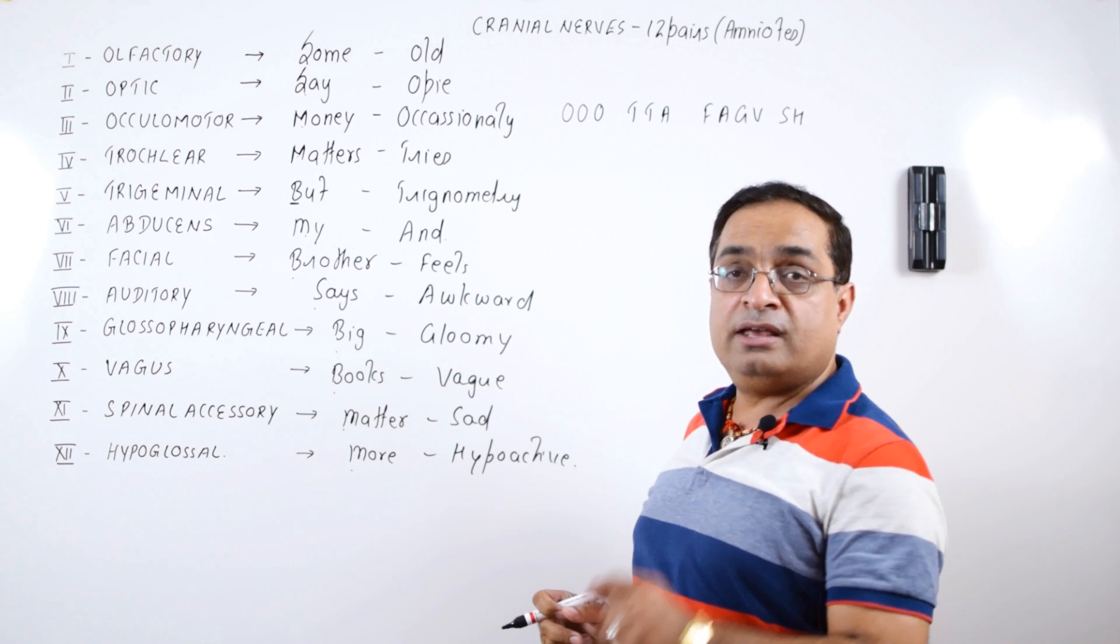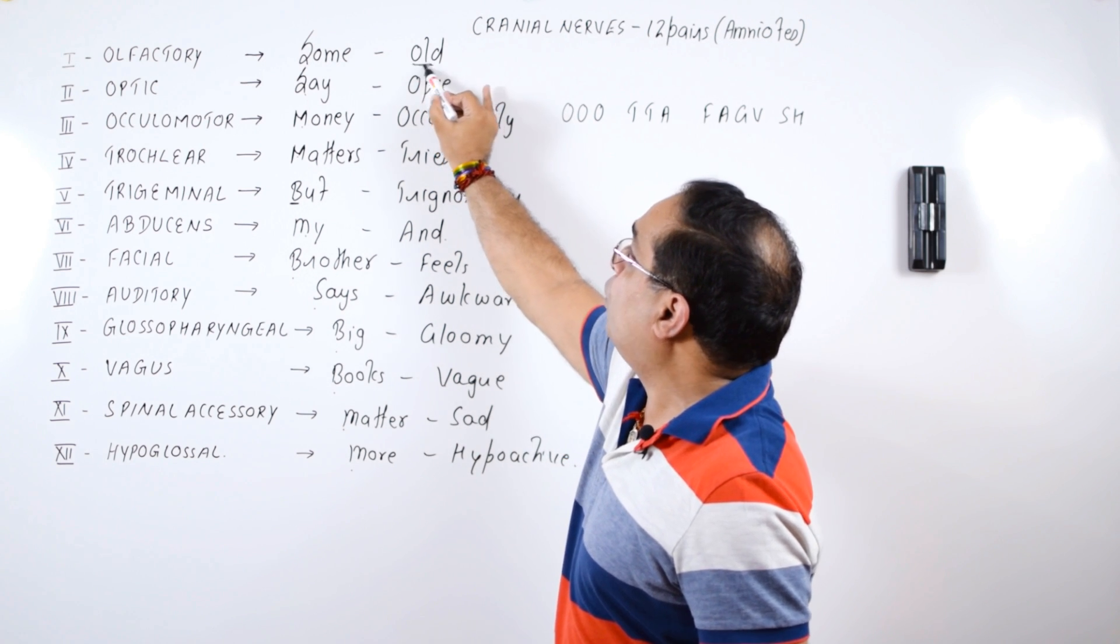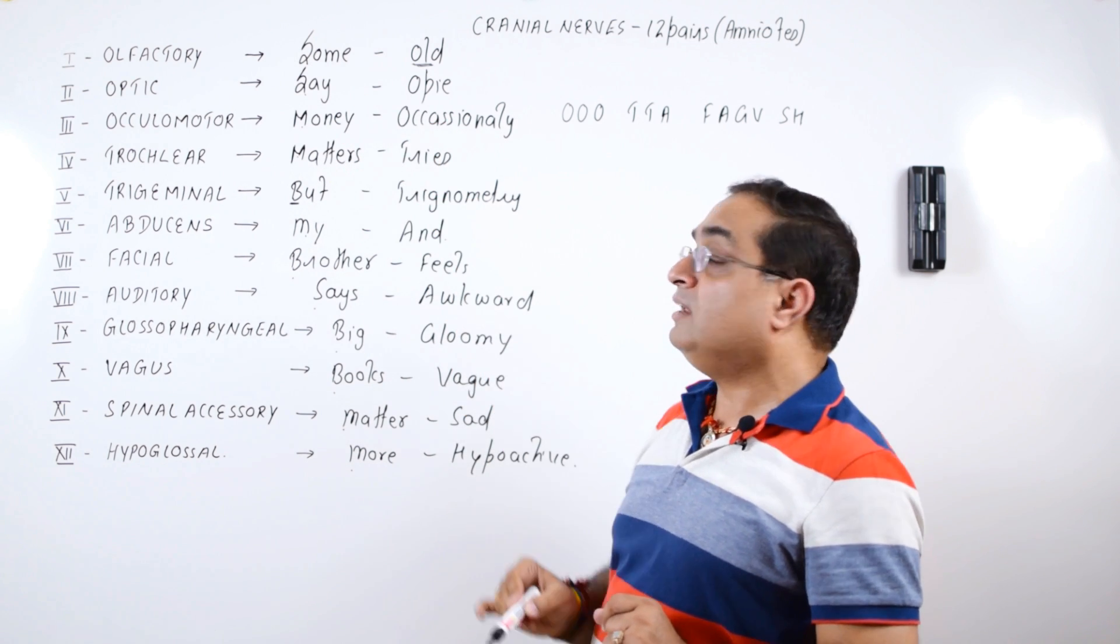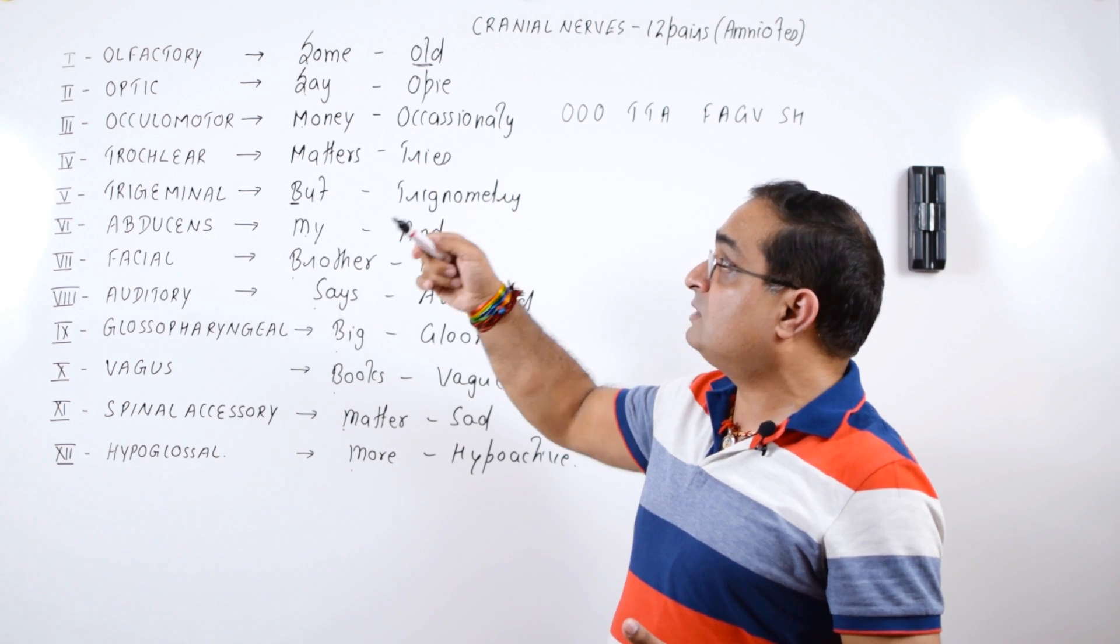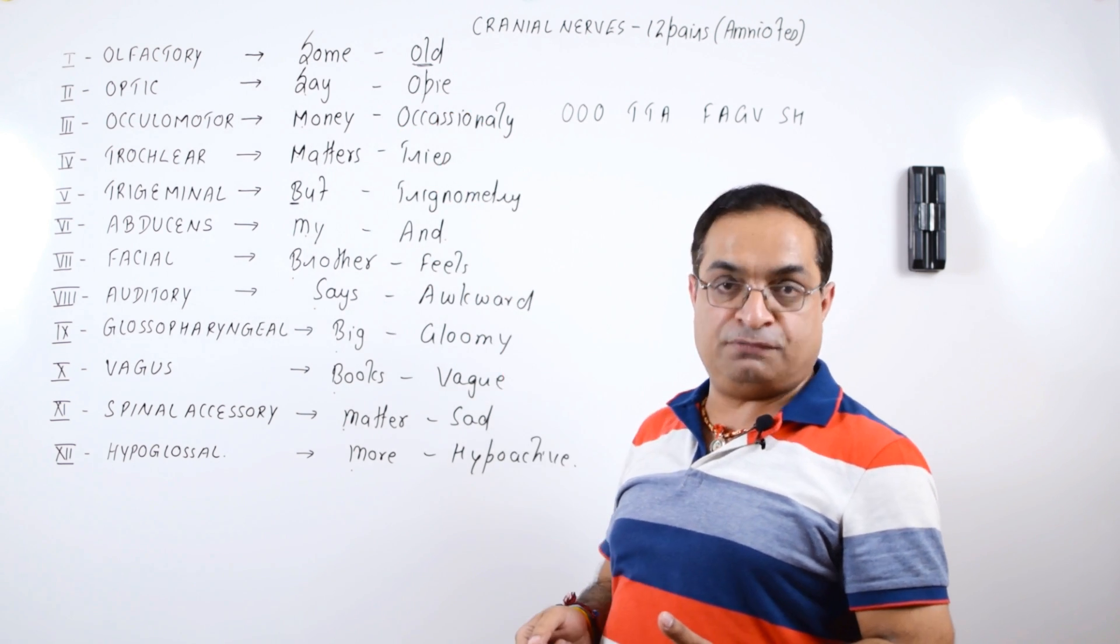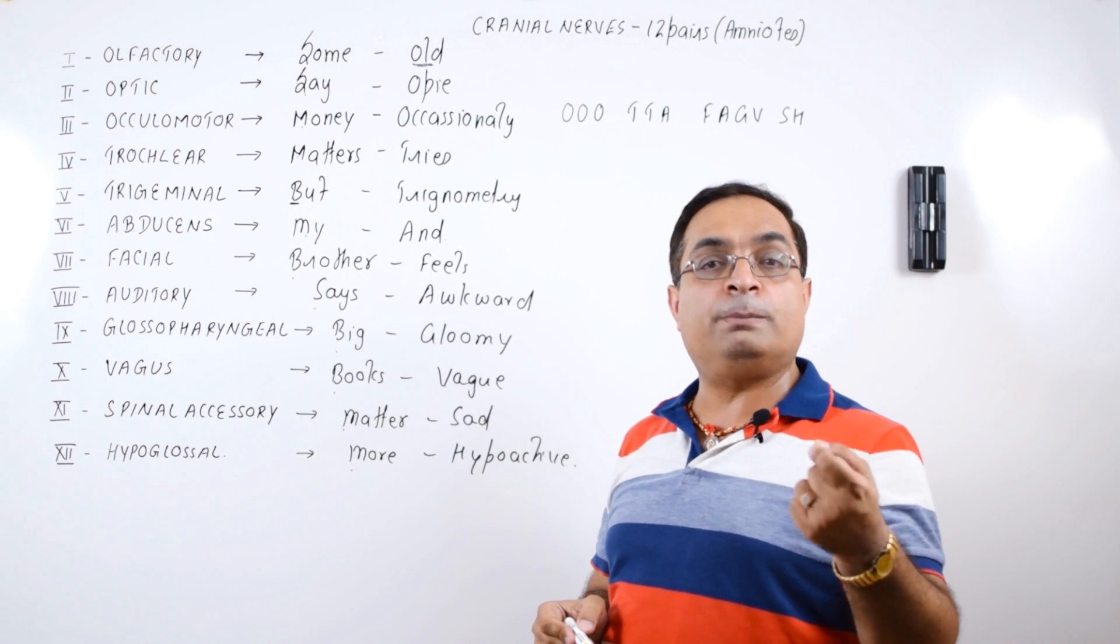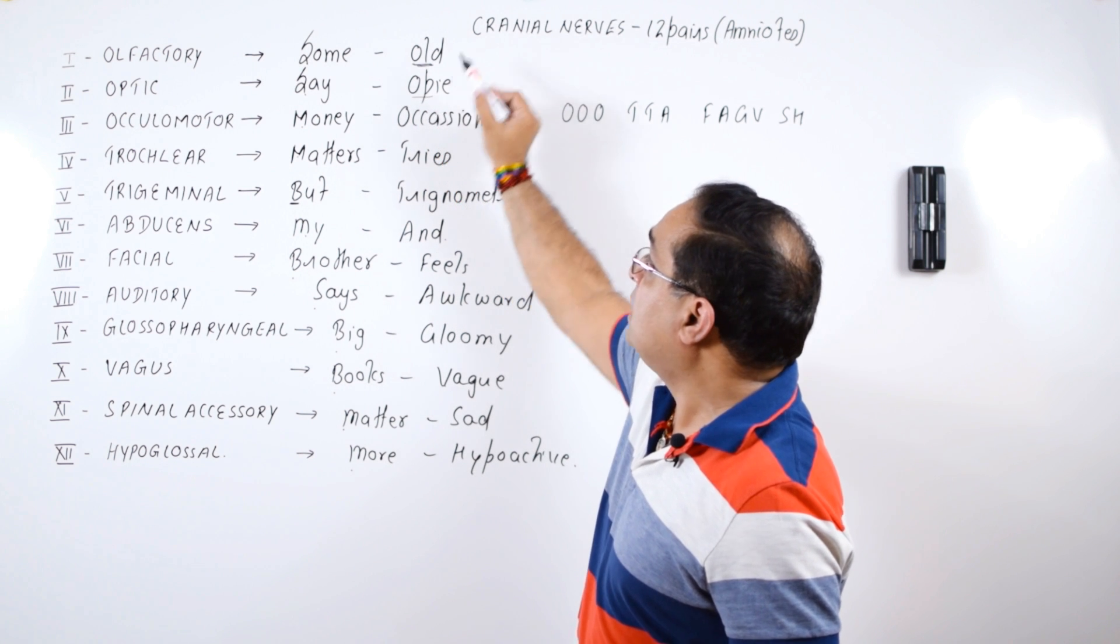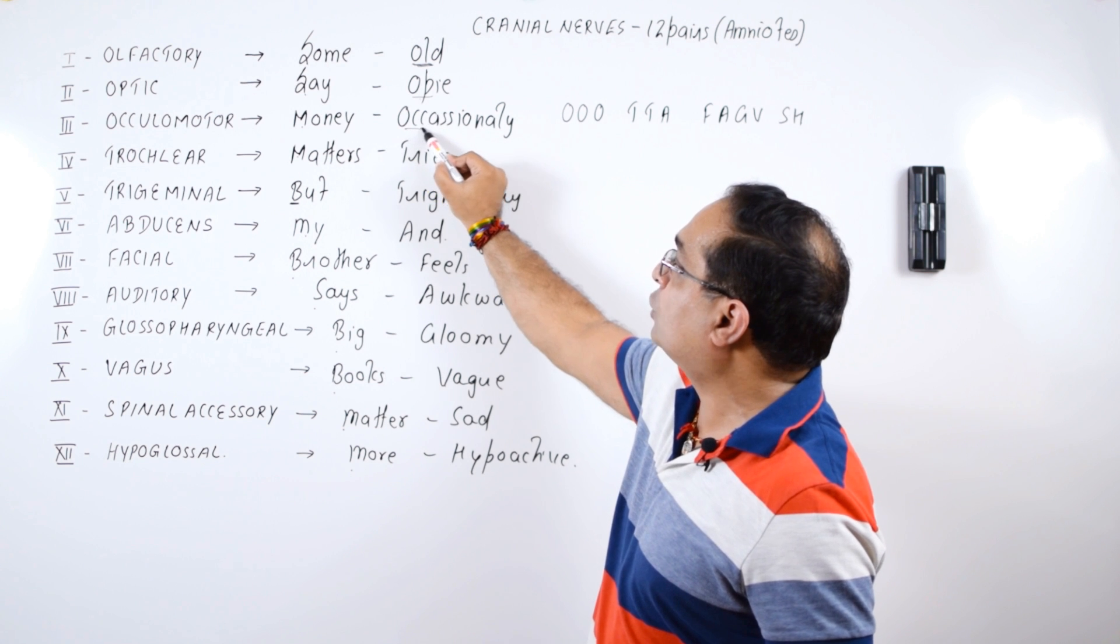Now from this sentence, we'll get a clear idea that the first cranial nerve starts with OL, it is olfactory. Because the names of the first three cranial nerves are starting with the alphabet O, so that might create a confusion. Is it the optic which is the first one or is it the olfactory which is the first one? So if you remember this sentence in sequence, that is old OP occasionally tries trigonometry, that will help you to figure out that the first cranial nerve is olfactory, second is optic, third is oculomotor.